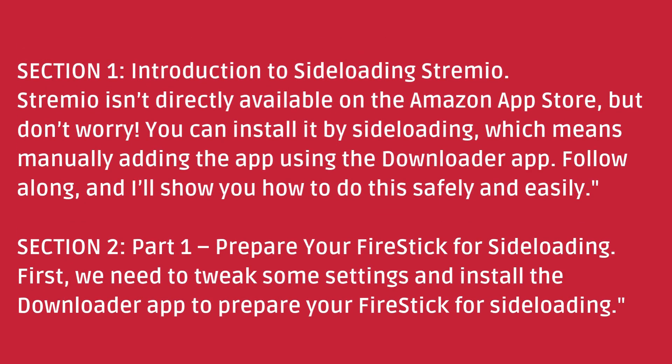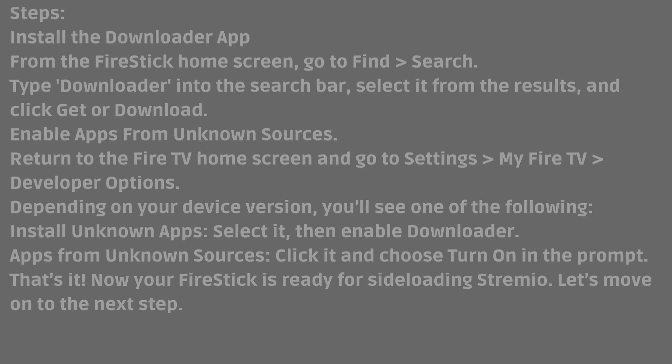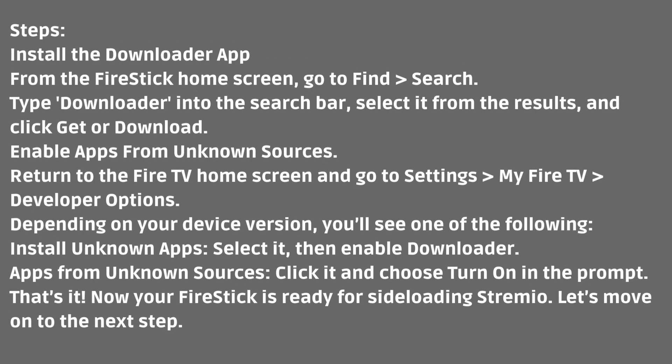Section 2, Part 1: Prepare Your Fire Stick for Sideloading. First, we need to tweak some settings and install the Downloader app to prepare your Fire Stick for sideloading. To install the Downloader app, from the Fire Stick home screen, go to Find > Search. Type Downloader into the search bar, select it from the results, and click Get or Download.